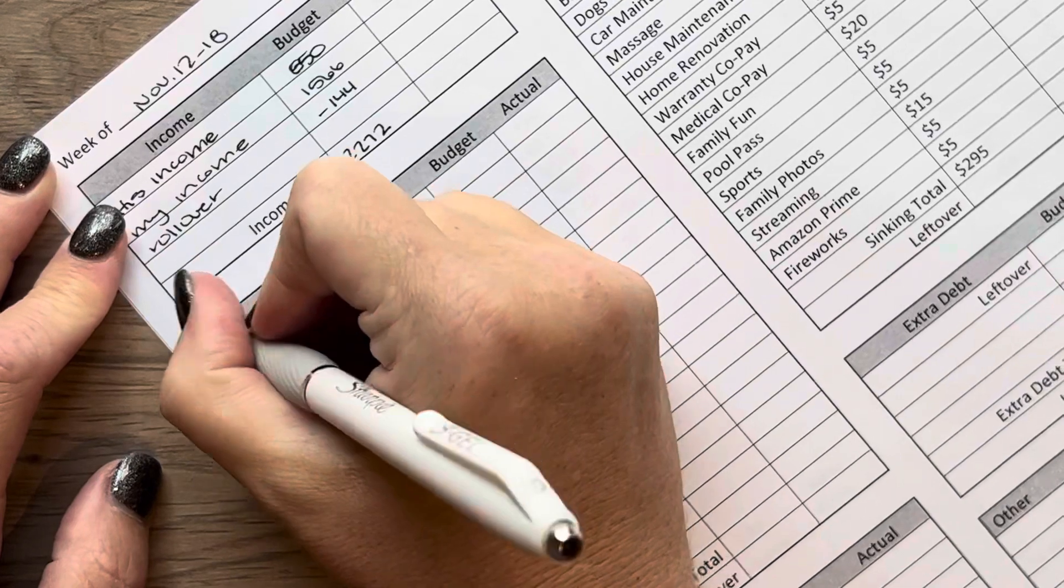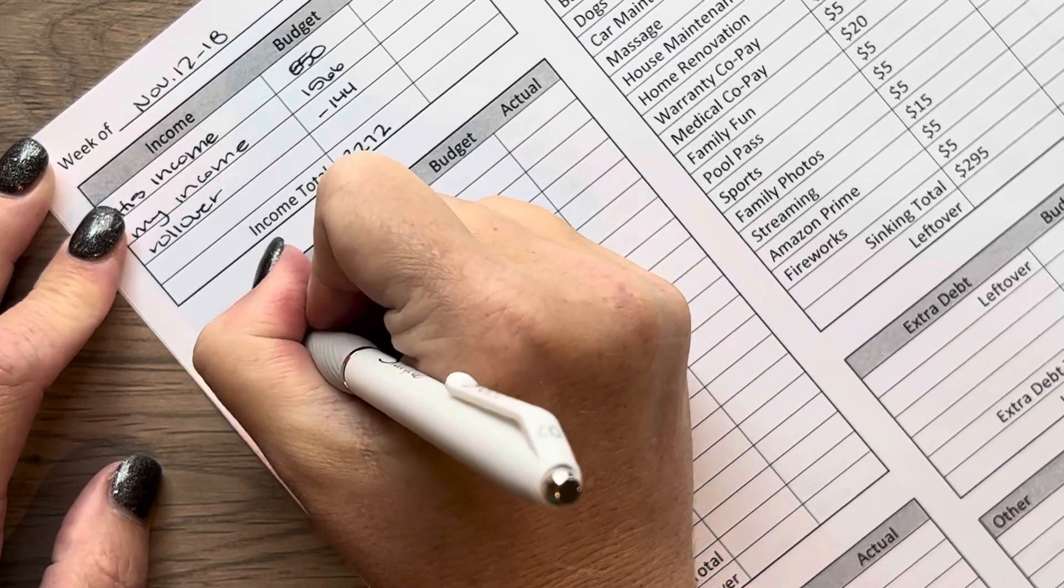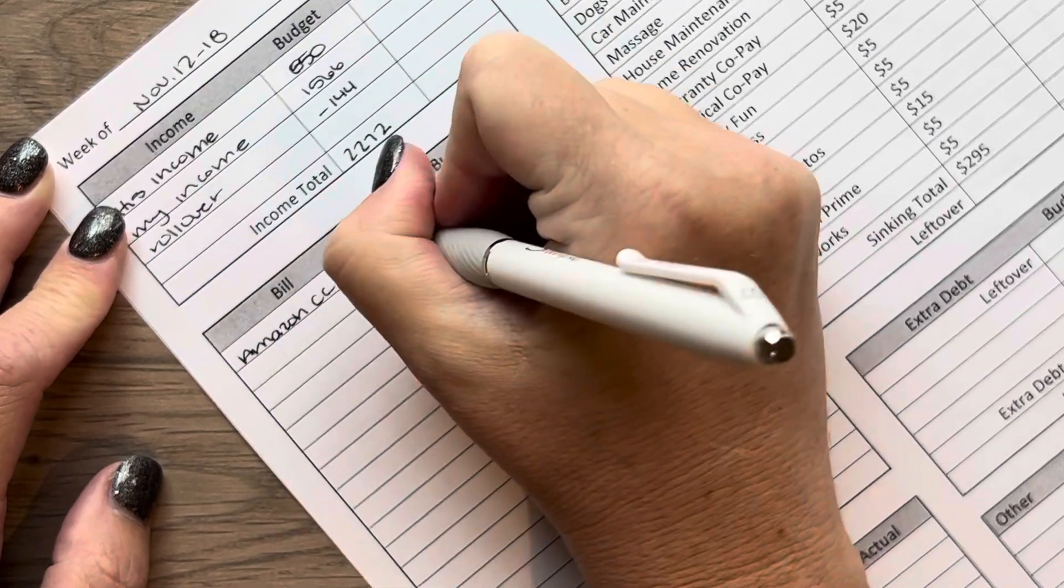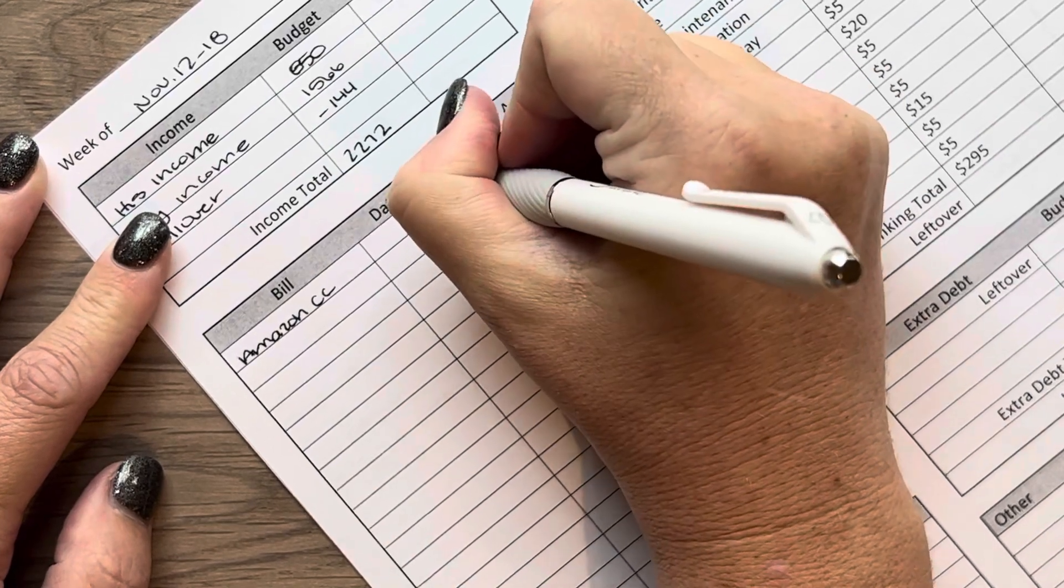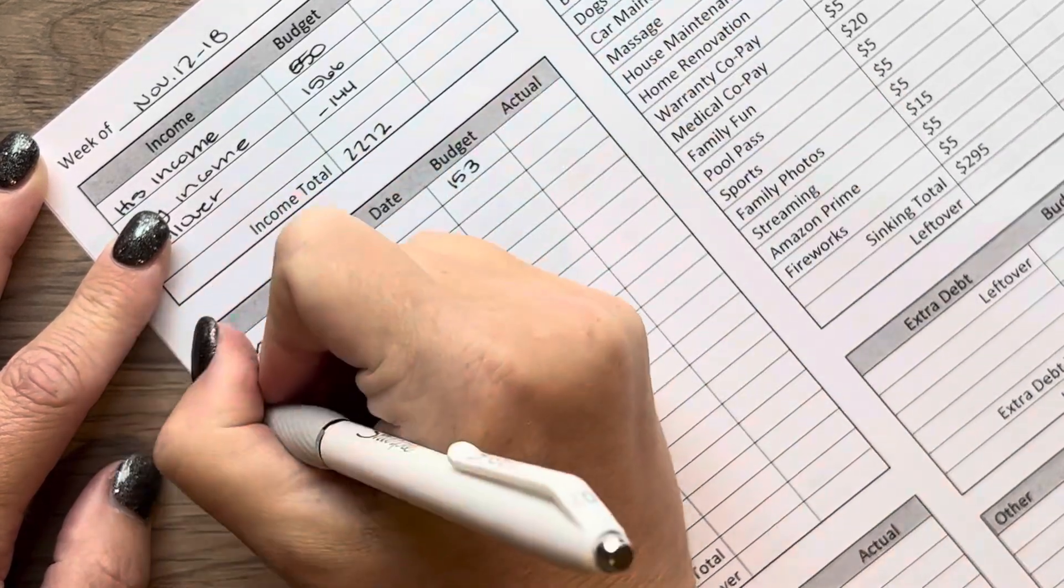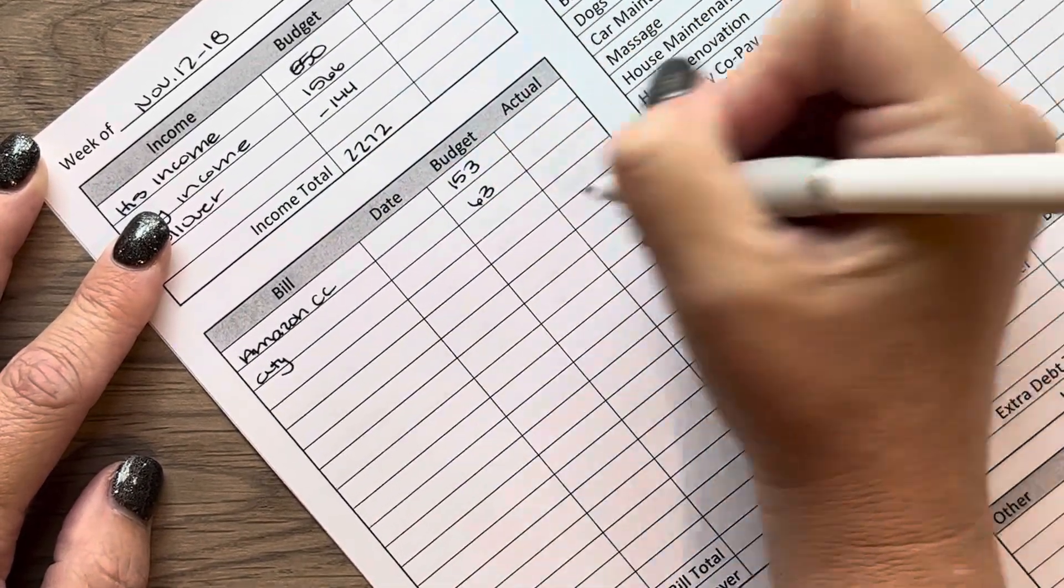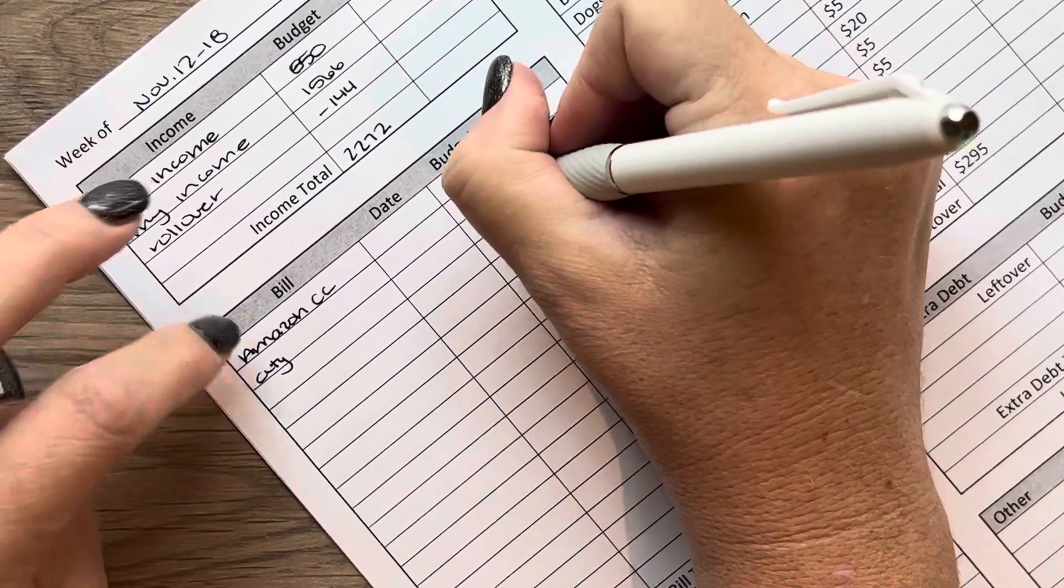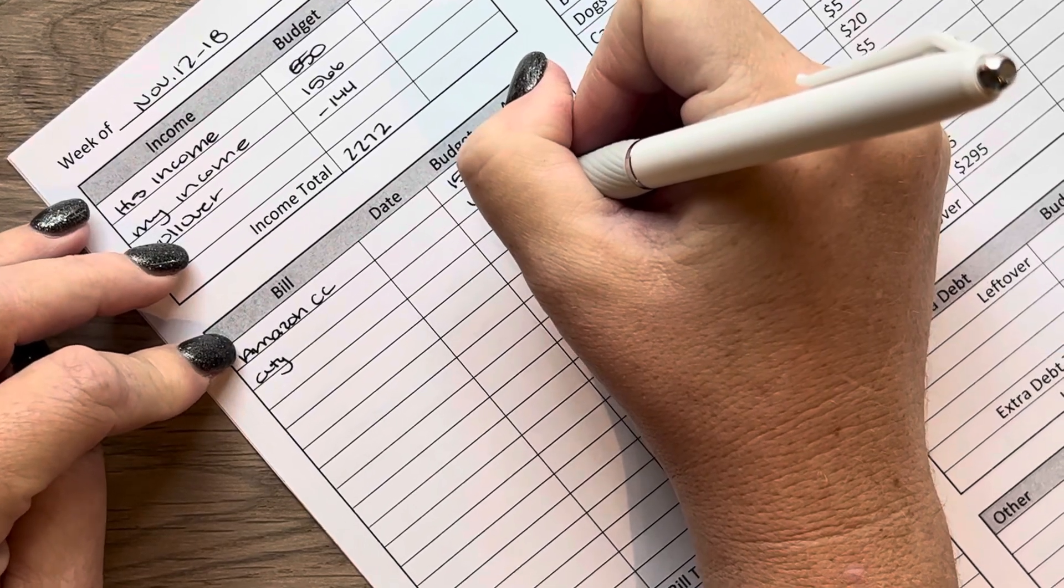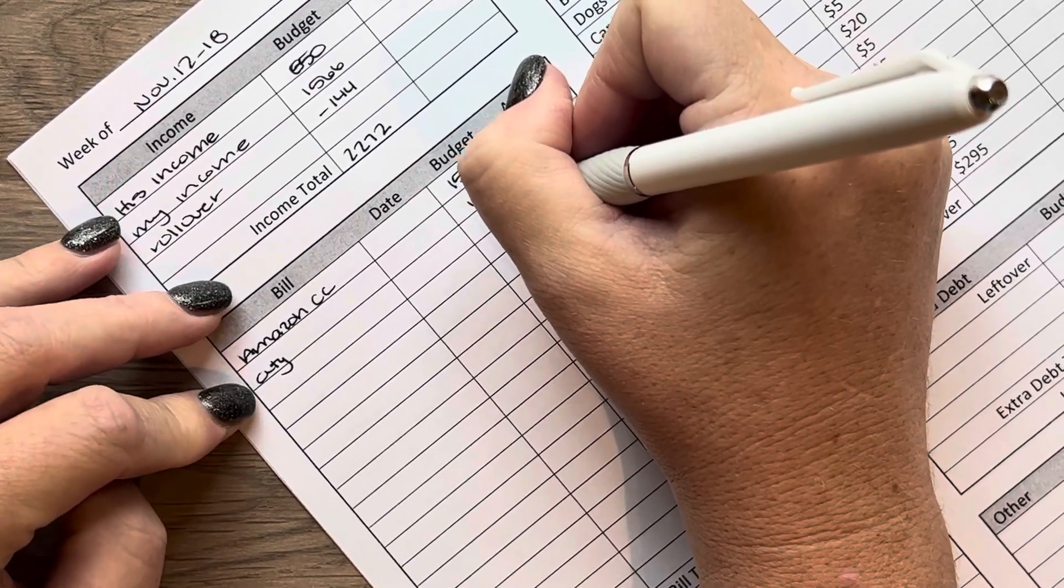And our bills coming out this month, or this week, I mean, is our Amazon credit card payment is $153. Citi is actually only $63. I looked ahead of time before I did this. Normally, I budget for I think $81. But it was less. So that was nice.